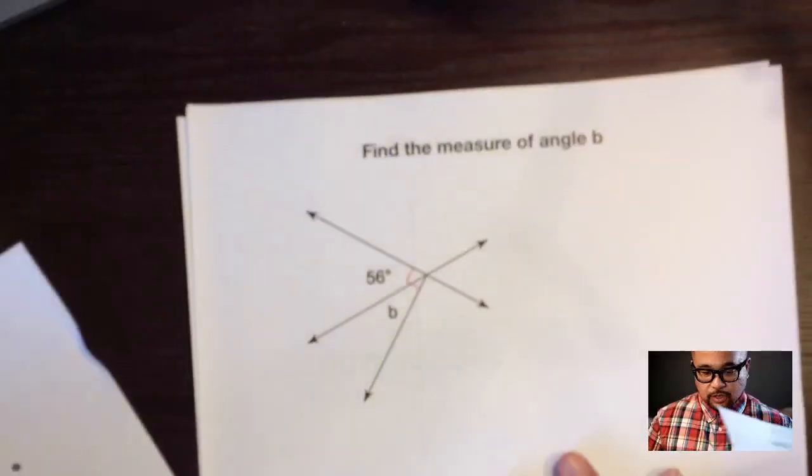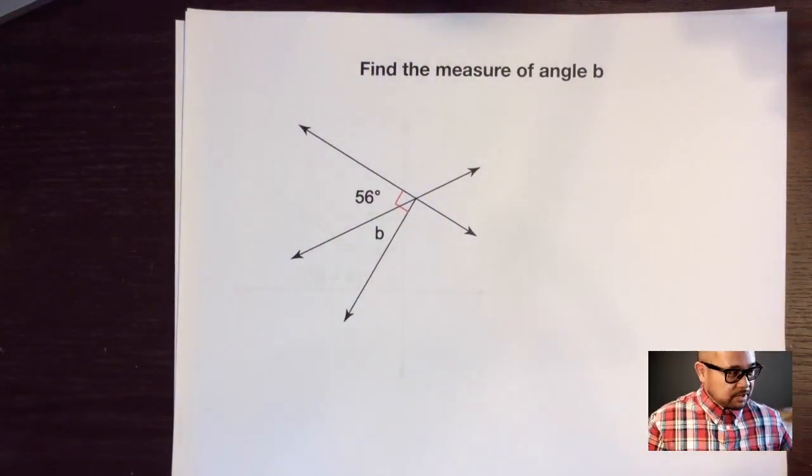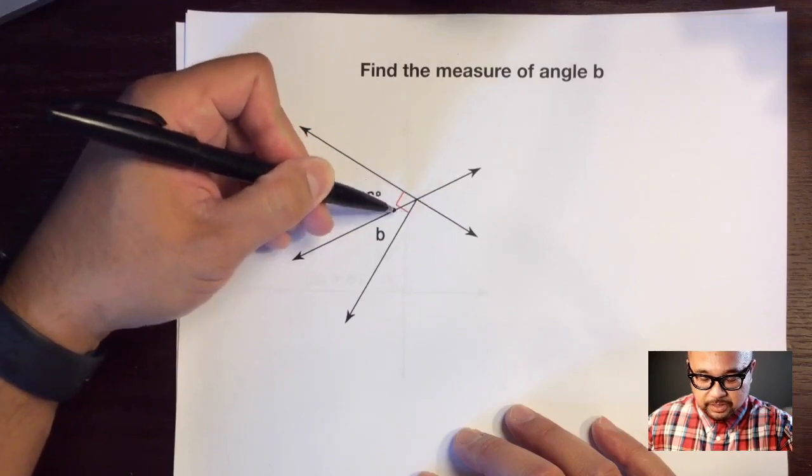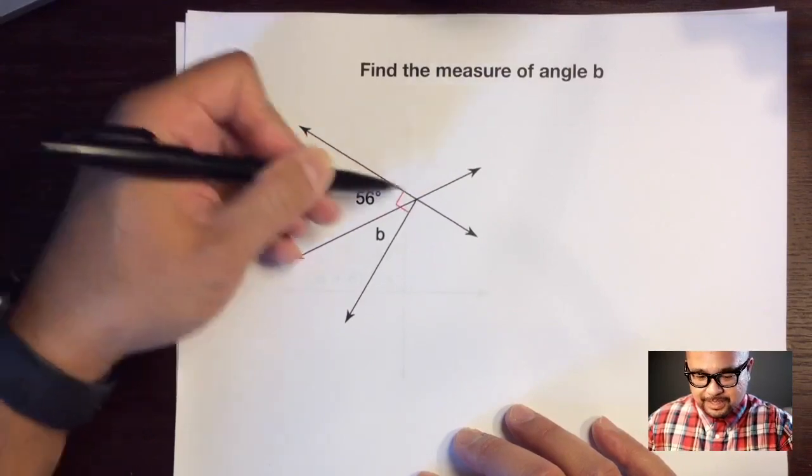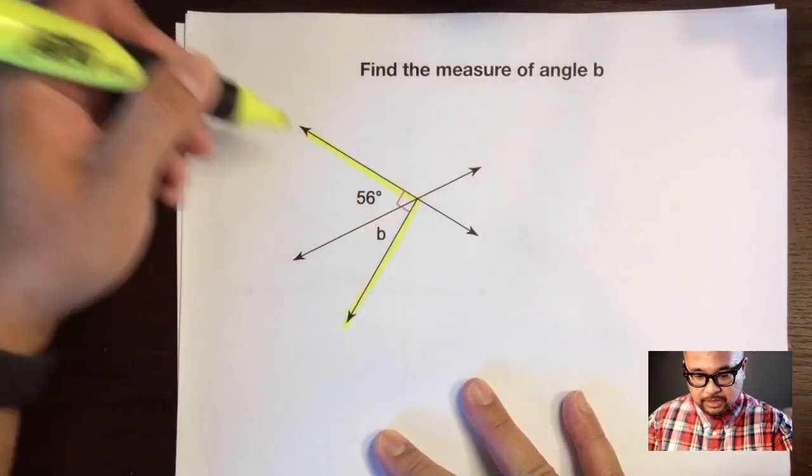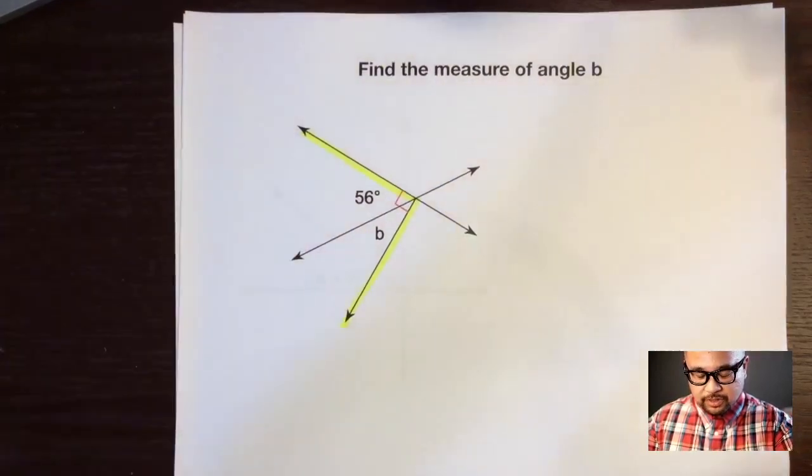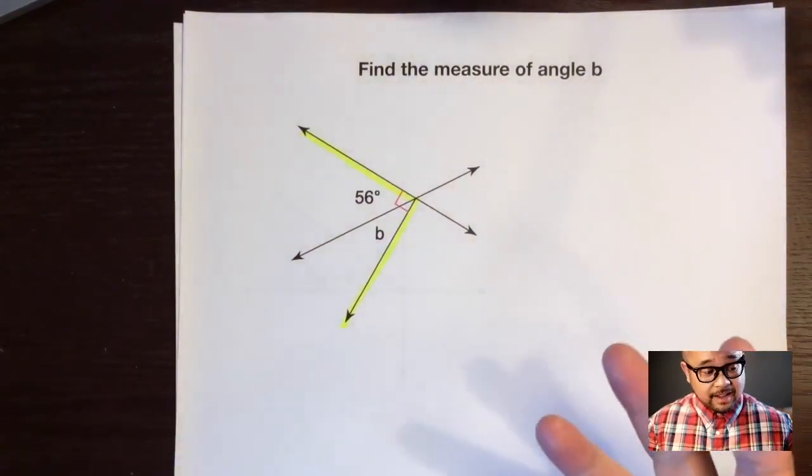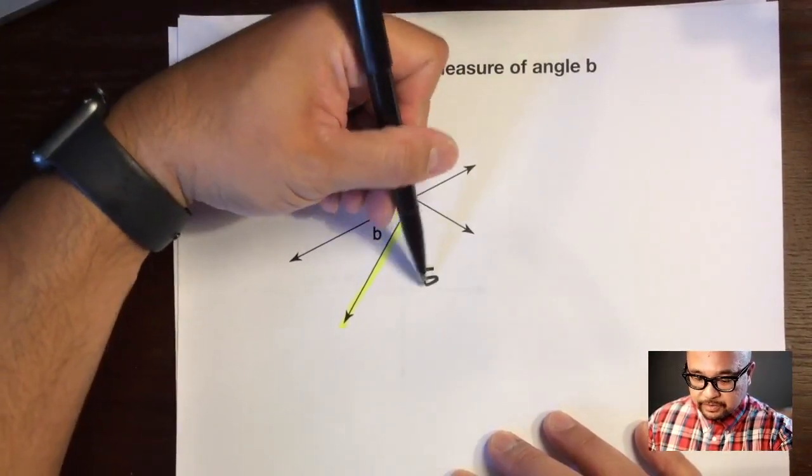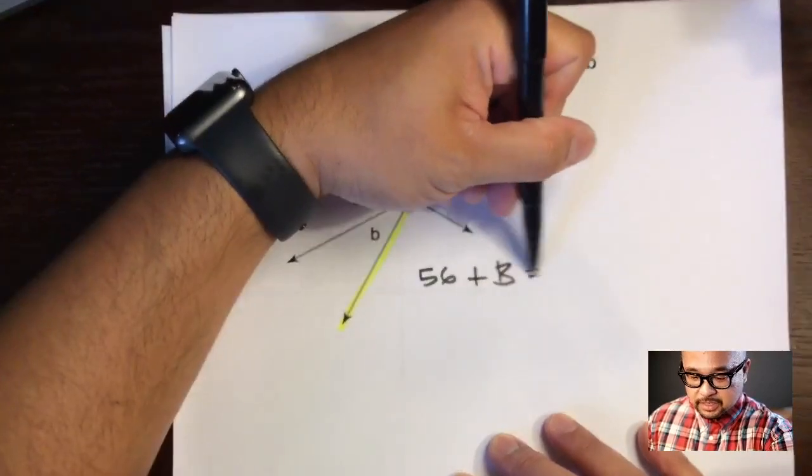Let's go with our first example. These two right here are complementary angles. You see this little box right there, this little square? This square says that this big angle is 90 degrees. So these two angles that are within this big angle have to add up to 90 degrees. This is how we set up our equation: 56 plus b is equal to 90 degrees.